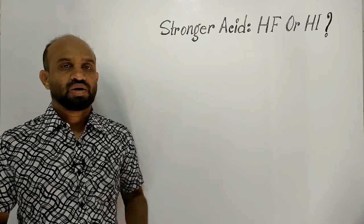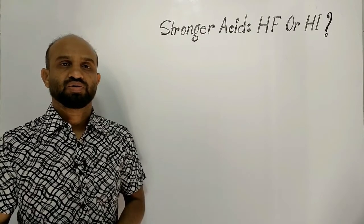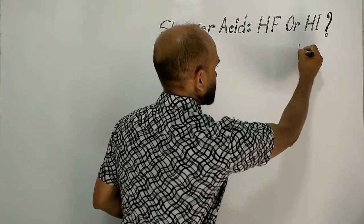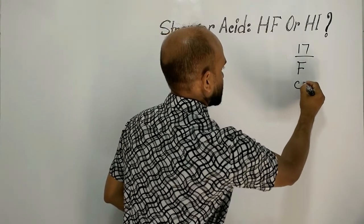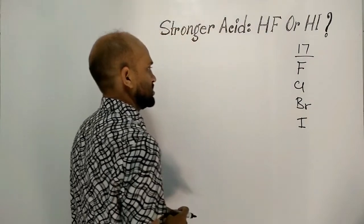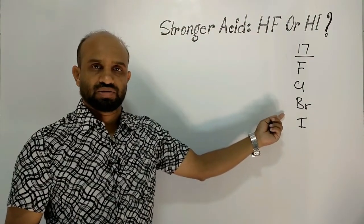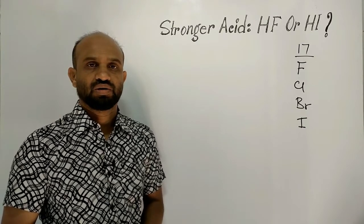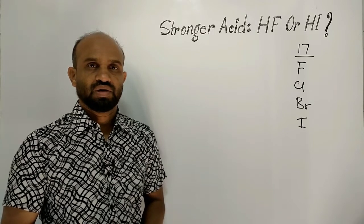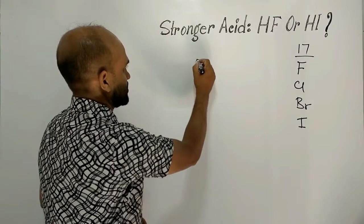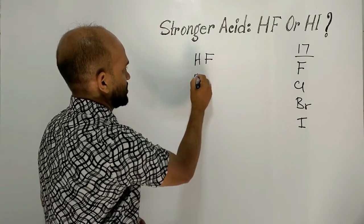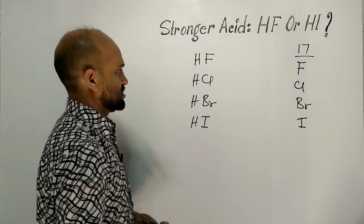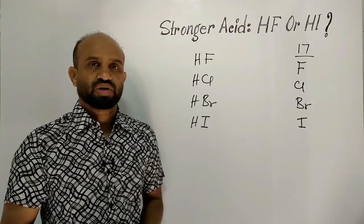First of all, let's write the positions of halogens in the periodic table. Halogens belong to column 17. In column 17, we have fluorine, chlorine, bromine, and iodine — these are called halogens, meaning 'sea salt producers.' The corresponding hydrohalic acids are hydrofluoric acid, hydrochloric acid, hydrobromic acid, and hydroiodic acid.